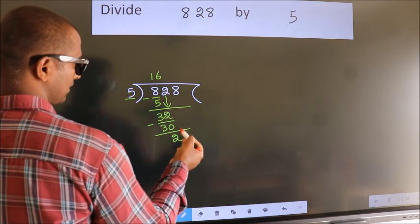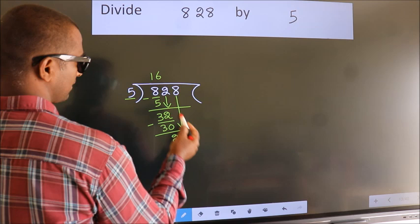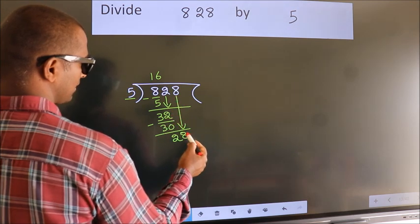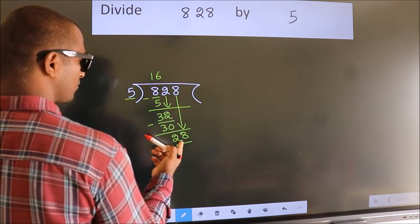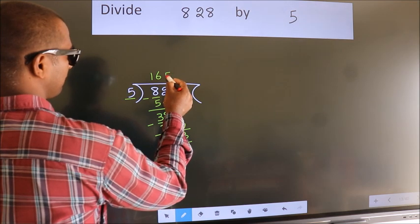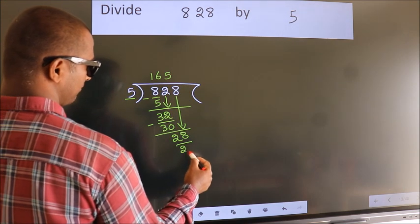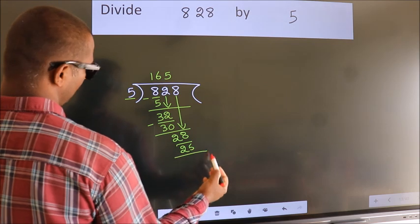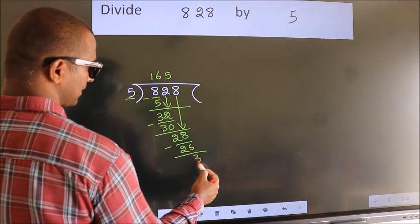After this, bring down the beside number. So, 8 down. So, 28. A number close to 28 in 5 table is 5, 5, 25. Now, we subtract. We get 3.